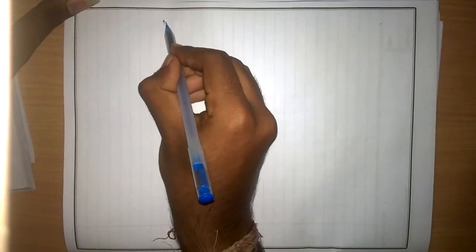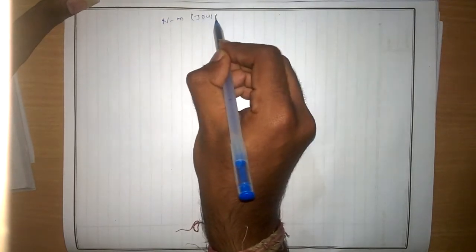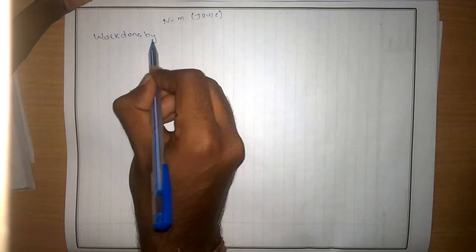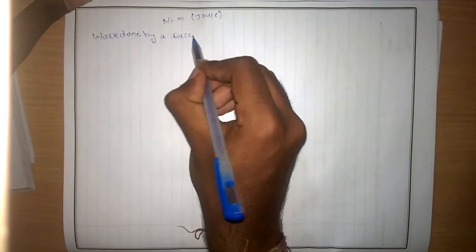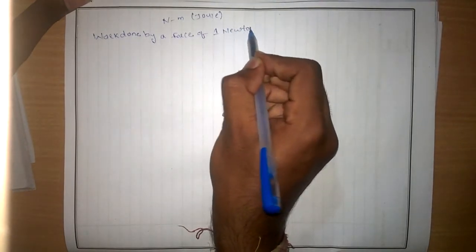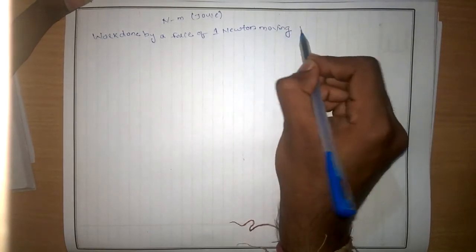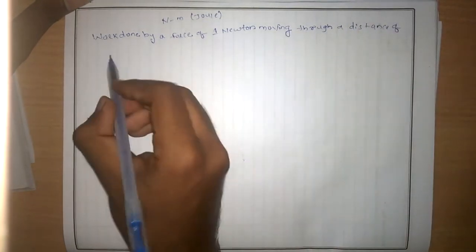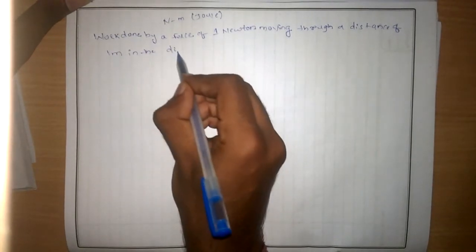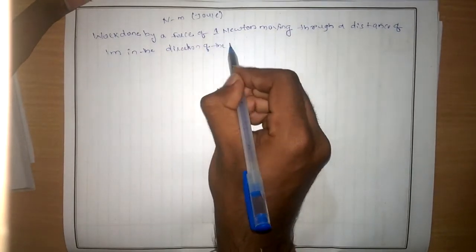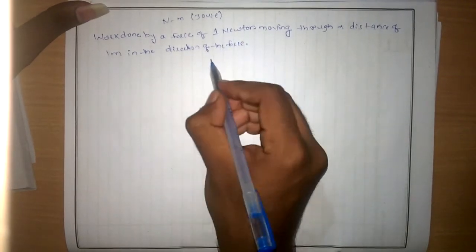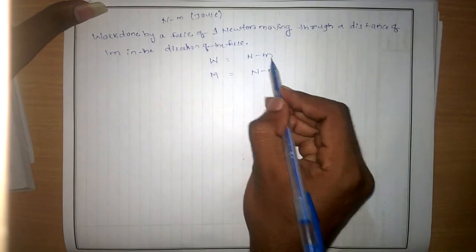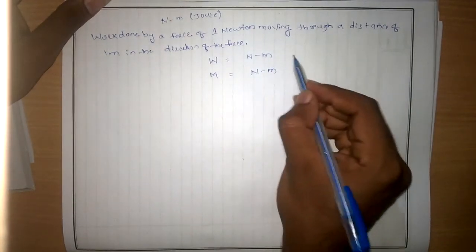We know that the unit of work is Newton meter, that is Joule — work done by a force of 1 Newton moving through a distance of 1 meter. The unit of moment is also Newton meter. Though they have the same units and dimensions, they are different physical quantities.